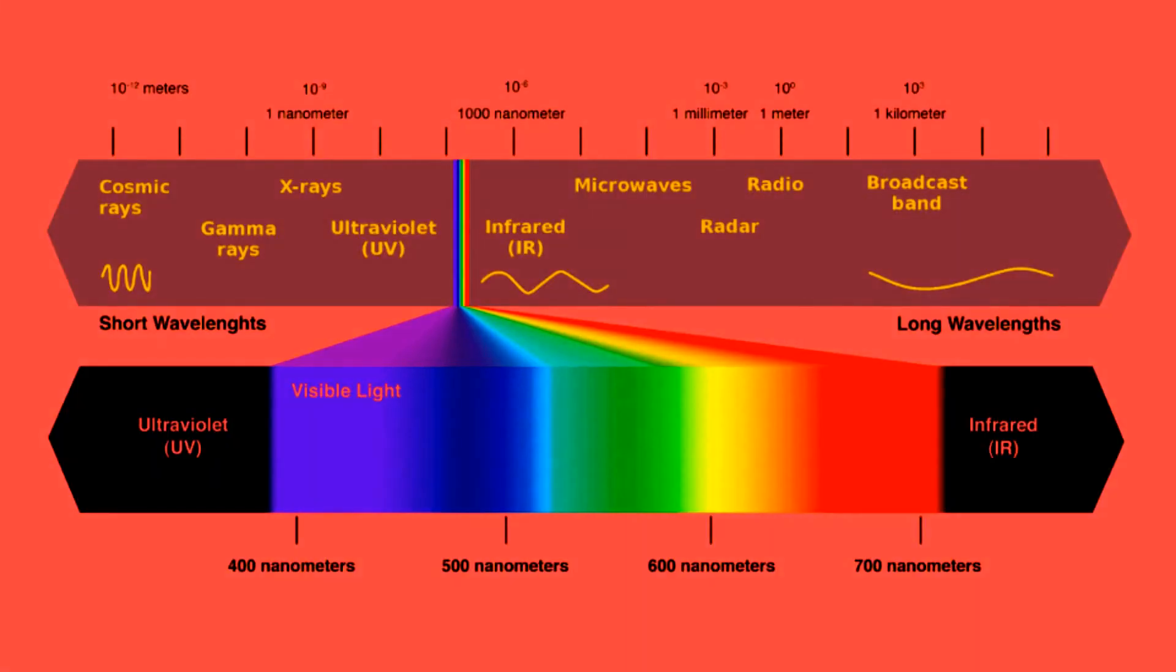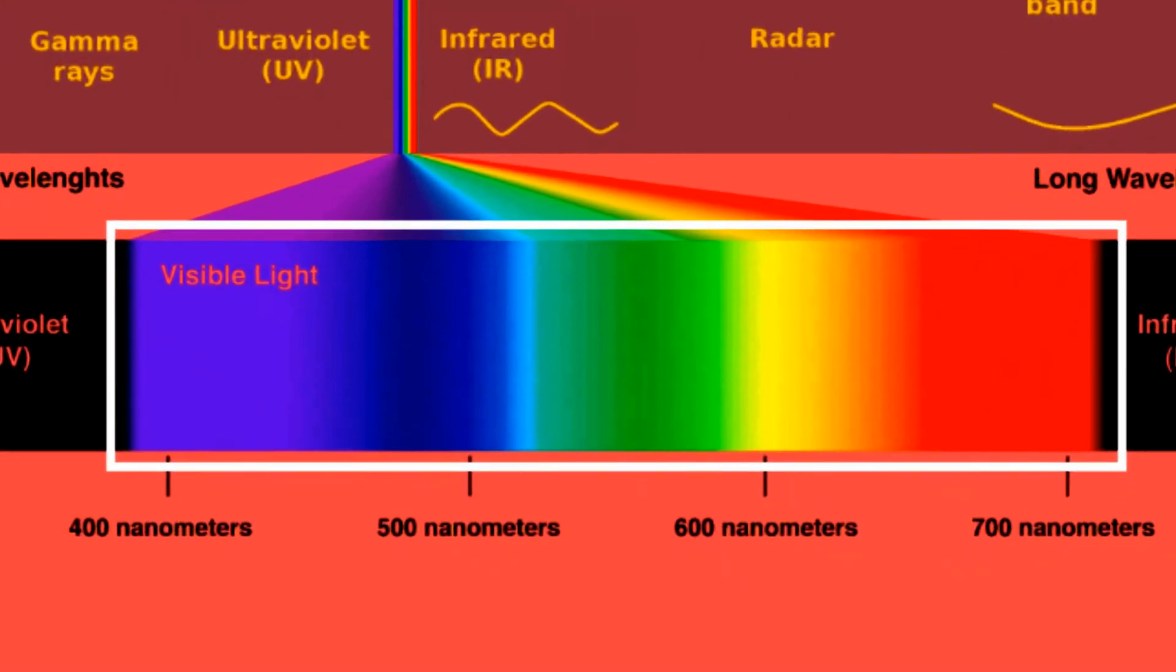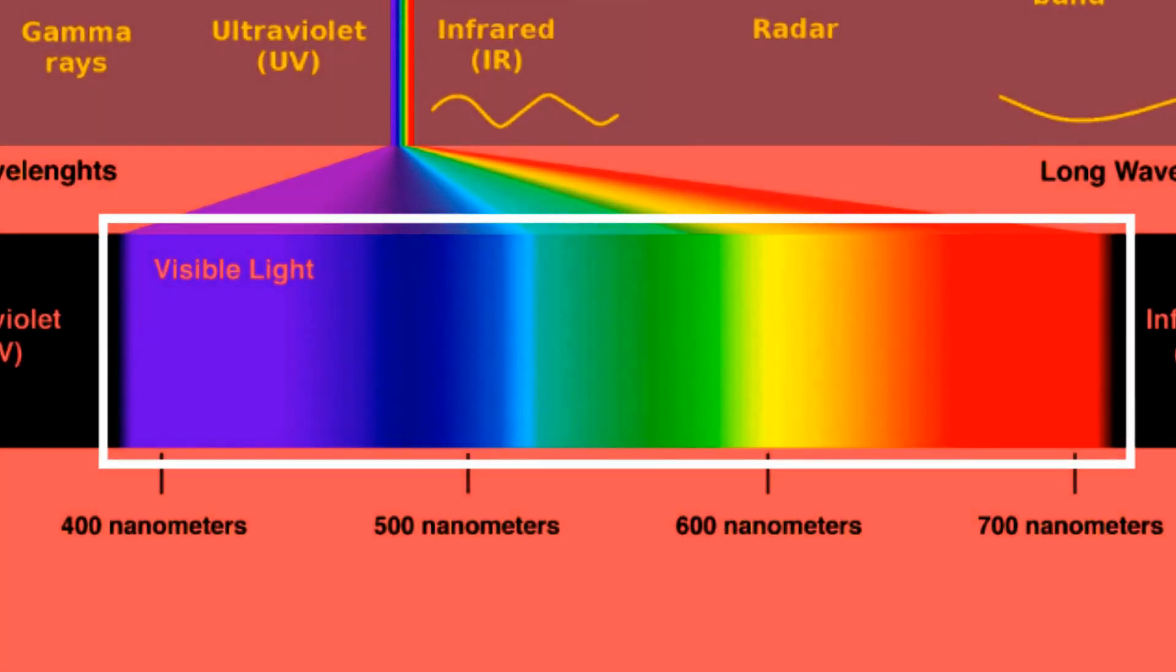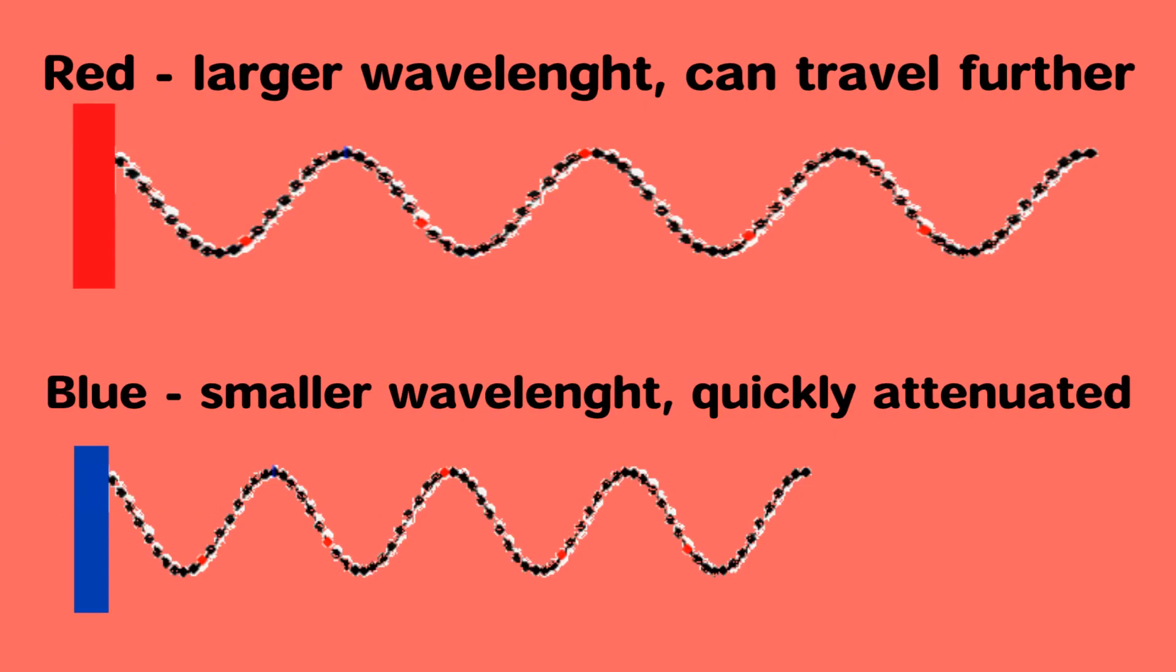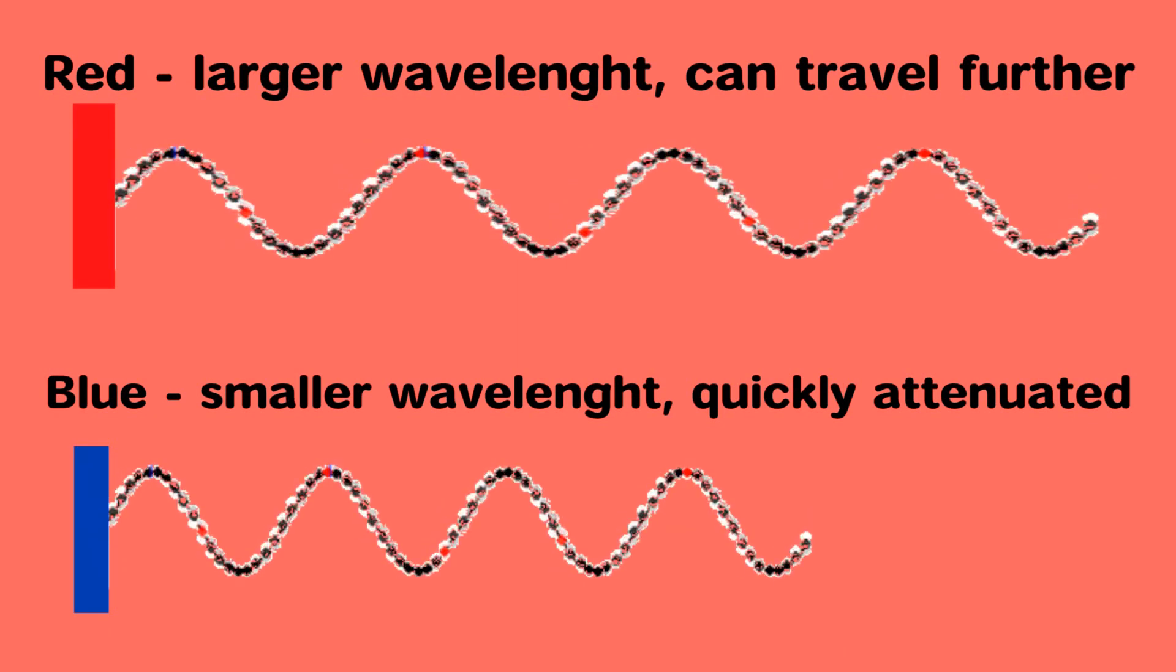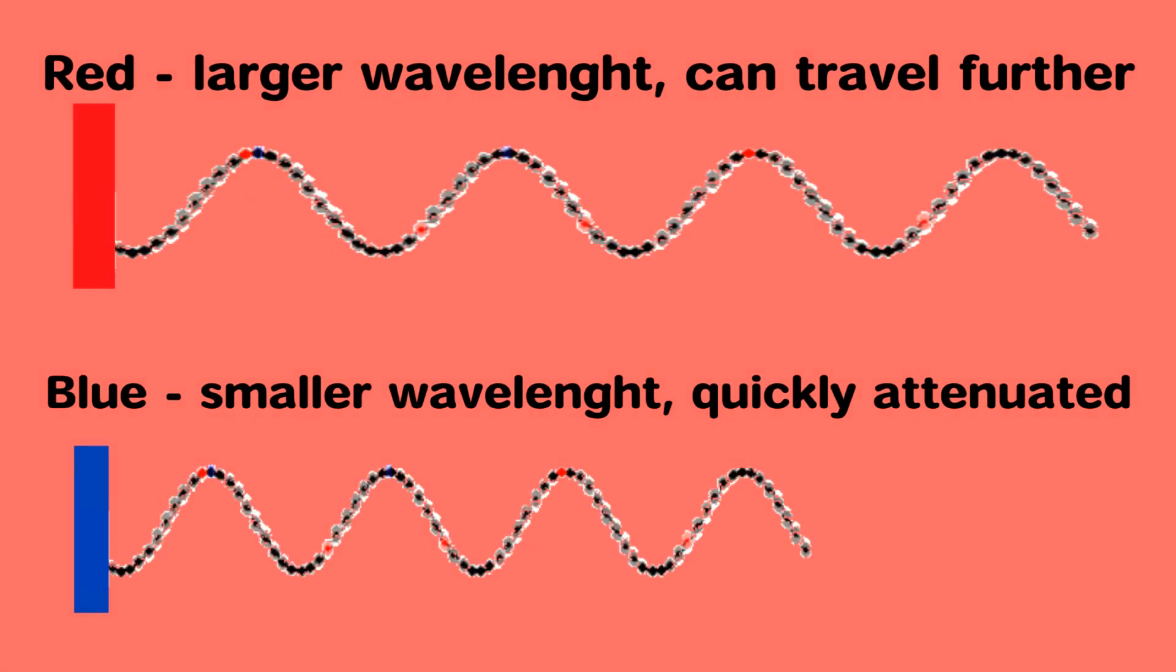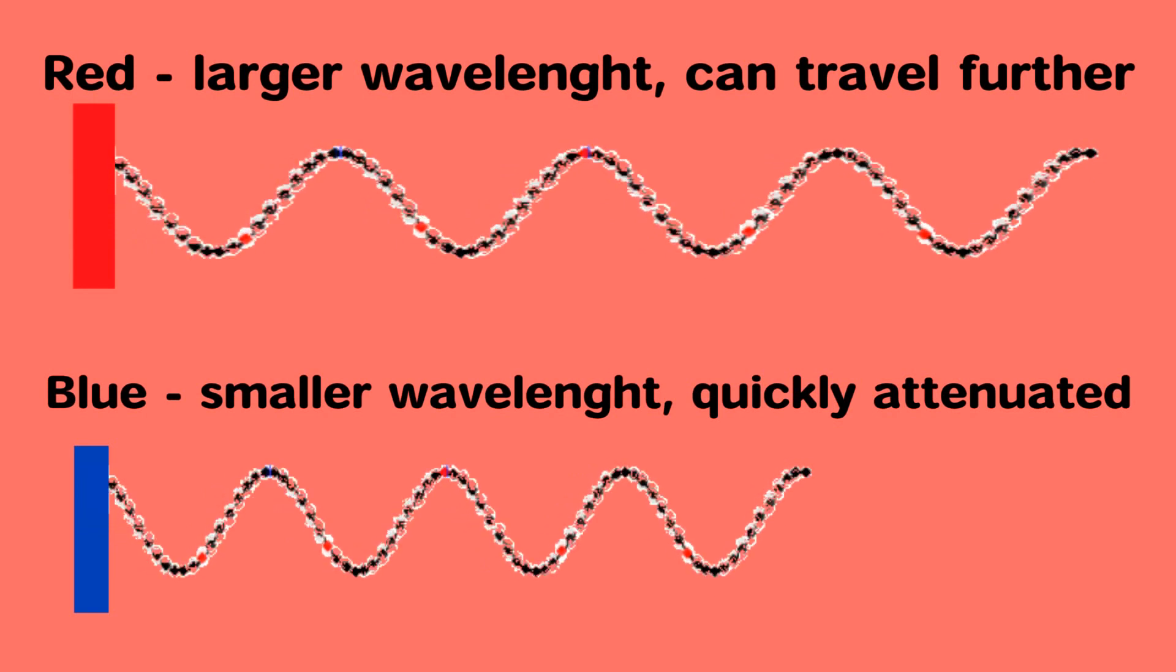The visible light consists of 7 colors. We see that red has the highest wavelength in the visible spectrum. By physics, higher wavelength means it can travel for a longer distance, which is evident from what we see here.